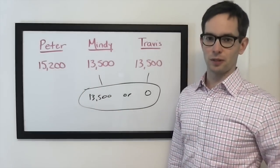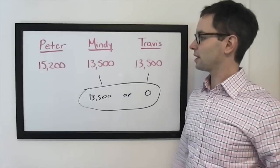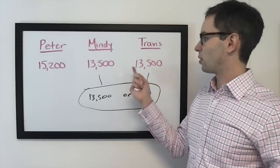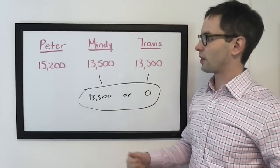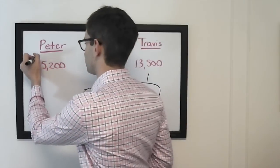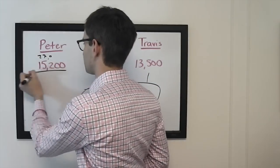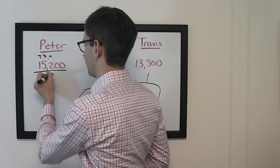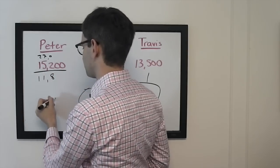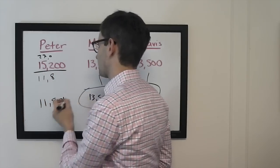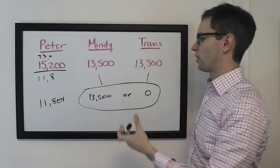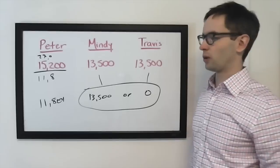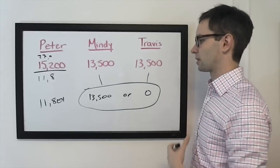Peter has a choice to make himself. He can cover a double up by both of them. That would be 27,000, so that means he's going to want to wager 11,801.